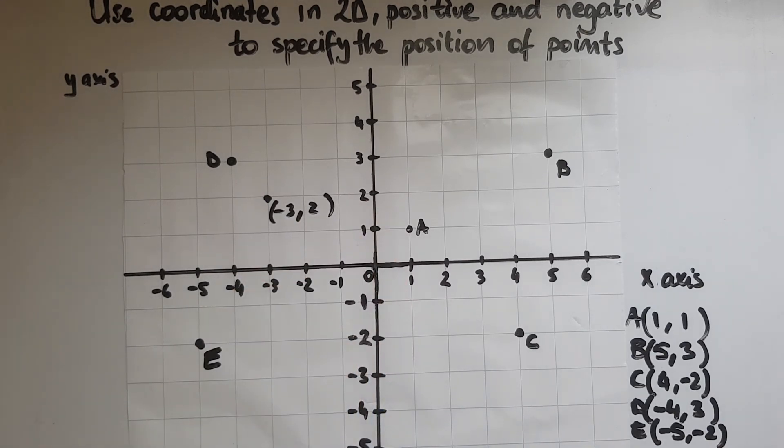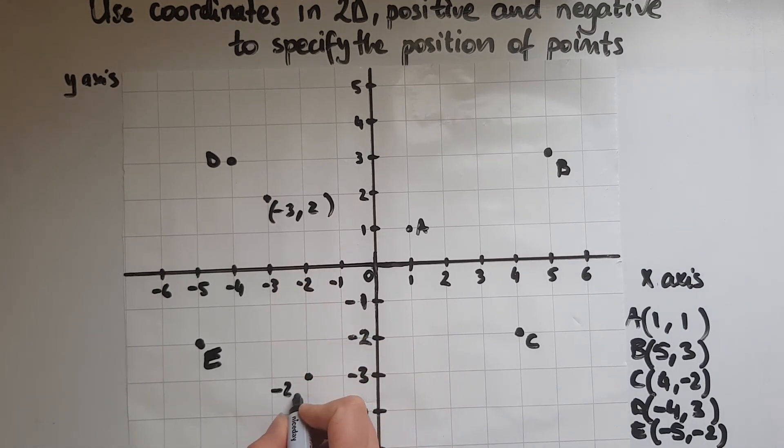Let's have a look at this point here. What are the coordinates of that point? x-axis, that's minus 2. And y is minus 3. So, (-2, -3).